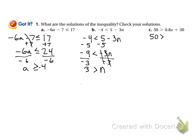50 is greater than 0.8x plus 30. I need to get rid of that 0.8x and I need to get rid of that 30. The first thing I should do is get rid of the 30, so I'll minus 30 from both sides and I get 20 is greater than 0.8x. Then I need to get rid of that 0.8 — right now that's multiplication, so I need to divide. 20 divided by 0.8 is 25, so 25 is greater than x.